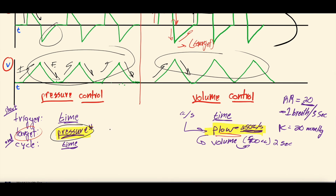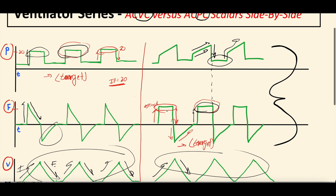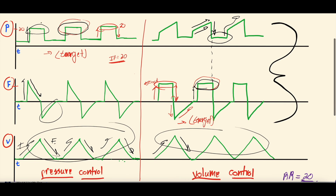So the big differences in scalars between modes are the pressure scalar and the flow scalar. Remember: in pressure control, the target is pressure, so you get the flat top on the pressure scalar. In volume control, the target is flow, so you get the flat top on the flow scalar. Hopefully that was helpful — this video just brings those two other videos together, so definitely check those out. Let us know your thoughts, comments, and questions below. As always, stay well, keep learning, subscribe, hit the bell button, and we'll see you next time. Bye.